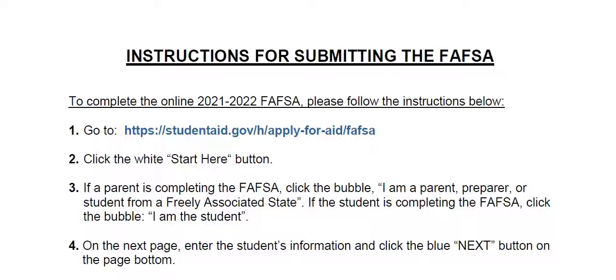The documents you will need to complete the FAFSA include the student's social security number, both parents' social security numbers, the student's driver's license number, copies of 2019 federal tax returns for the student and both parents including W-2 information, records of any untaxed income such as child support received, income from interests, and veterans non-education benefits for your parents, as well as information on cash savings and checking account balances.